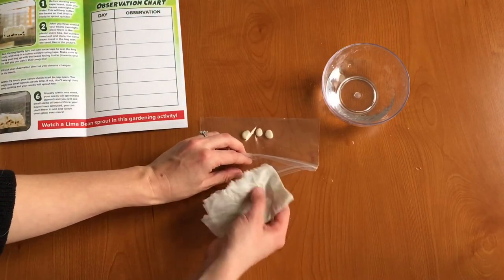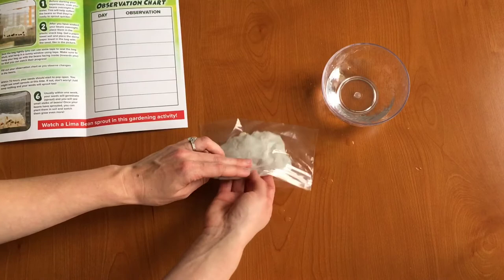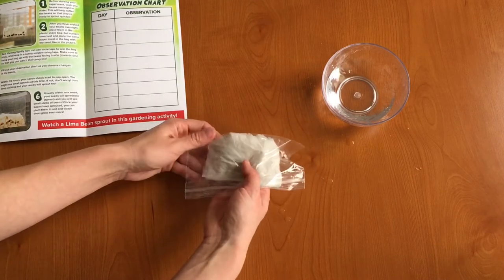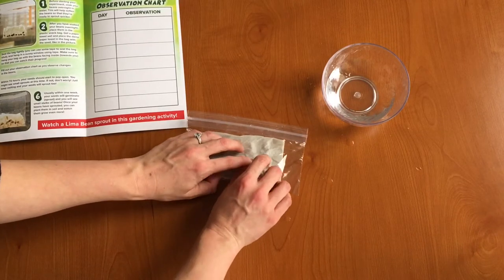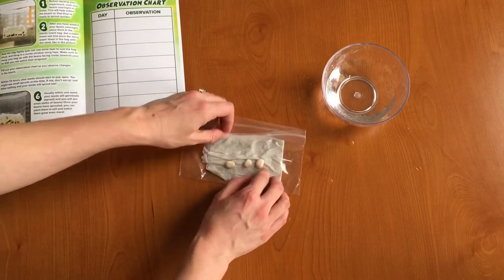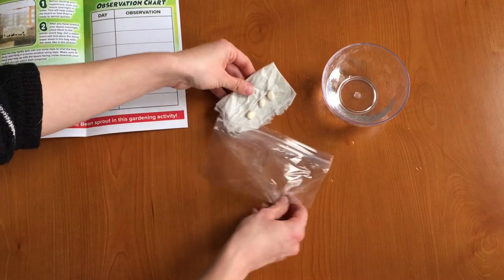Now there's two ways you can do it. I'll show you the first way. You can just put your paper towel in there with your seeds just like that. You can see that we have the paper towel in the background and the seeds in the front.